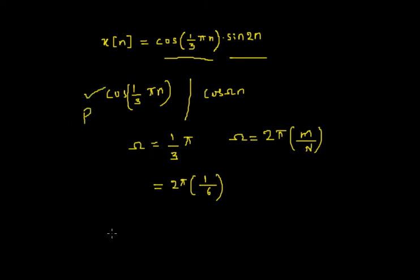Now I will consider the second part, sine 2n. Comparing this with the standard signal sine omega n, I can find omega as 2. To arrange this as a rational multiple of 2 pi is not possible, hence this signal is aperiodic.